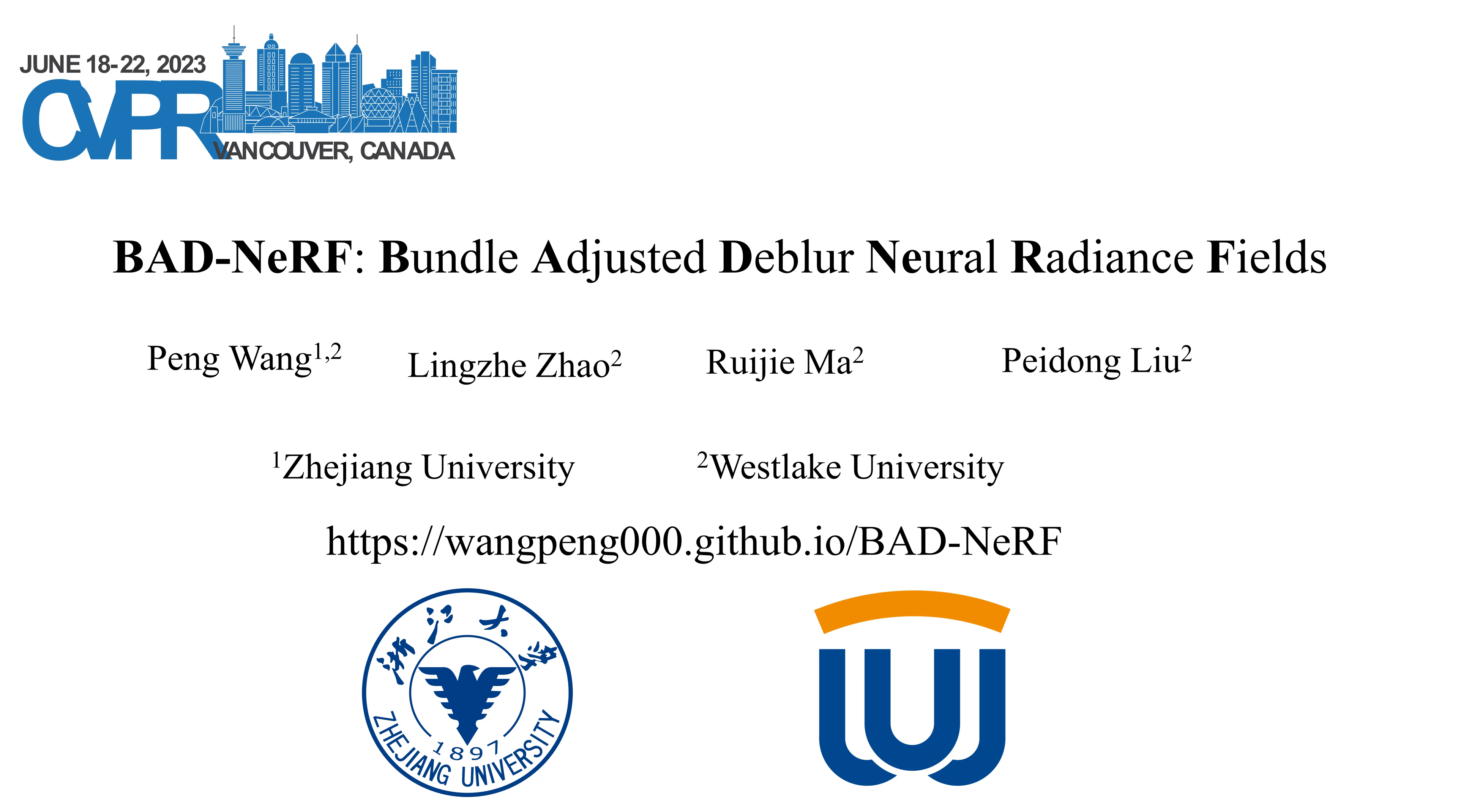Hello, everyone. In this paper, Bundle Adjusted Deblur Neural Radiance Fields, we propose a photometric bundle adjustment formulation for motion-blurred images by jointly learning the 3D representation and optimizing camera poses with blurry images and inaccurate initial poses. It achieves superior performance over prior works on both synthetic and real datasets.